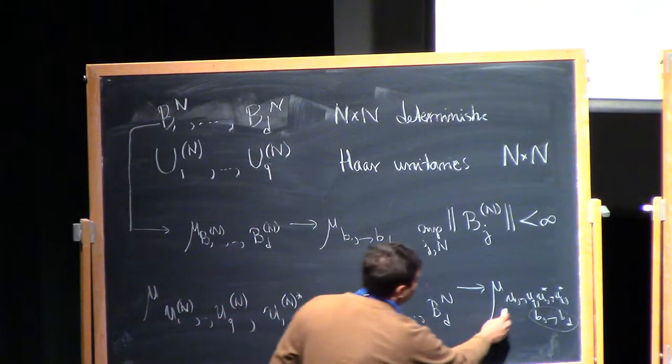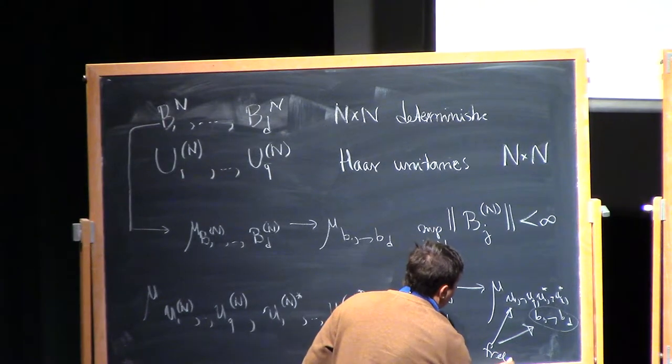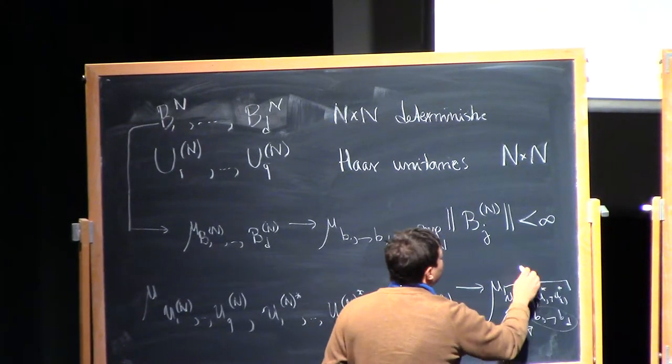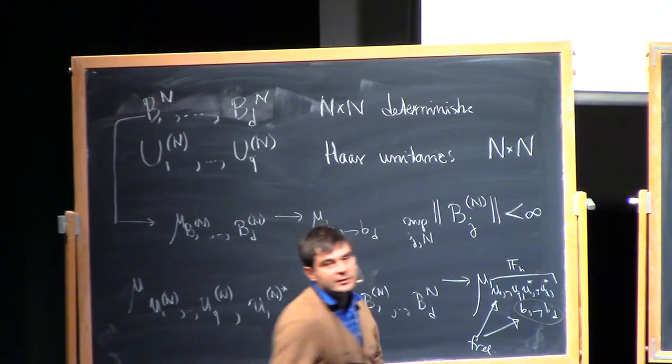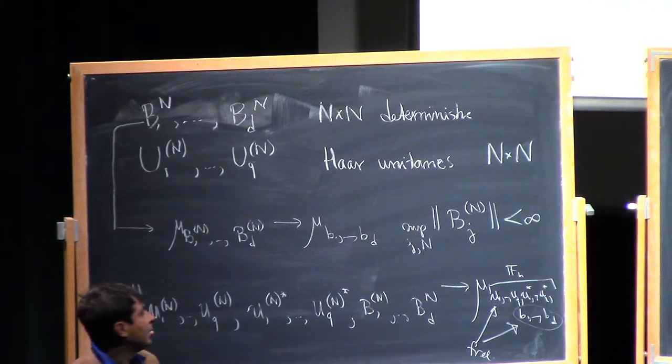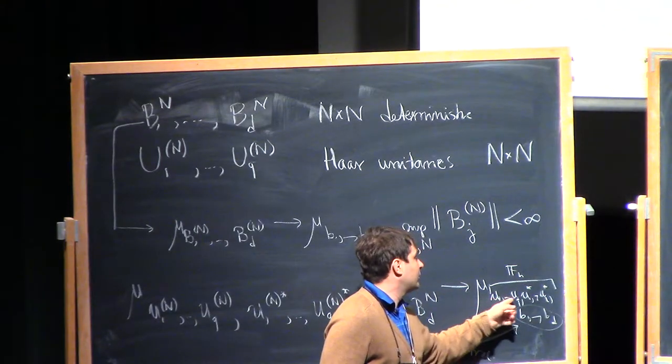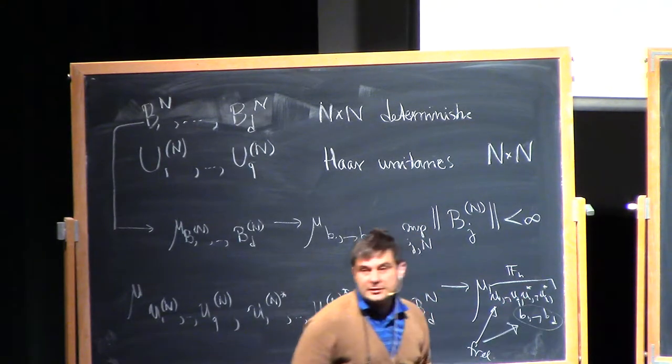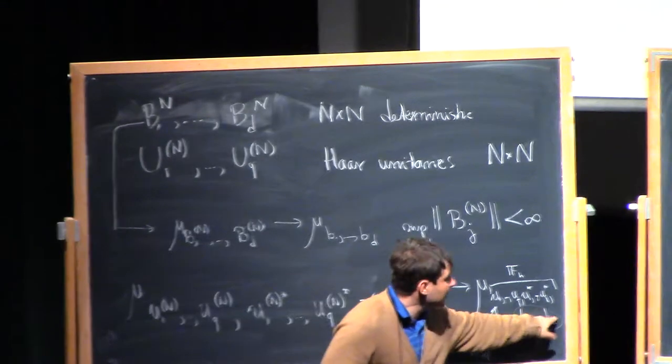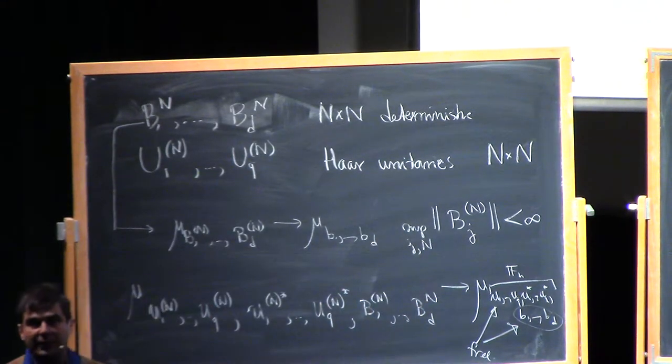But the point is that these are free. And these look like generators of a free group. They are free unitaries. Each unitary has all moments zero except for the zeroth one. So these are like q generators and their inverses. And then there are these b's from which they are free.